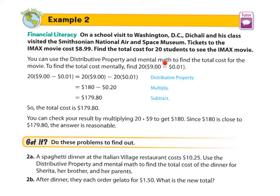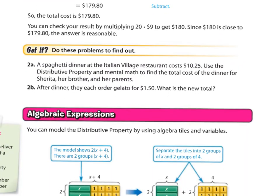You can use the distributive property and mental math to find the total cost. To find the total cost mentally, find 20 times 9 — you're rounding this number up — and then take a penny away for each of those 20 nines. So 20 times negative $0.01 gives you negative $0.20, which is 20 pennies. That gives you 180 minus 20 cents equals $179.80. The total cost is $179.80.